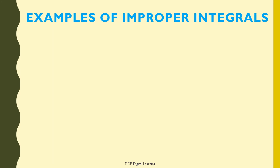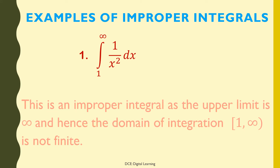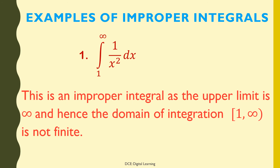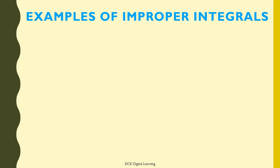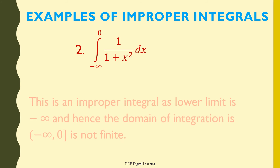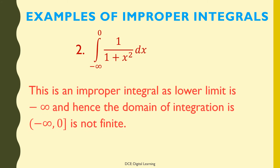Examples of improper integrals. First: ∫(1/x²)dx from 1 to ∞ is an improper integral, as the upper limit is infinity and hence the domain of integration, the semi-closed interval [1, ∞), is not finite. Second: ∫(1/(1 + x²))dx from −∞ to 0 is an improper integral, as the lower limit is −∞ and hence the domain of integration (−∞, 0] is not finite.